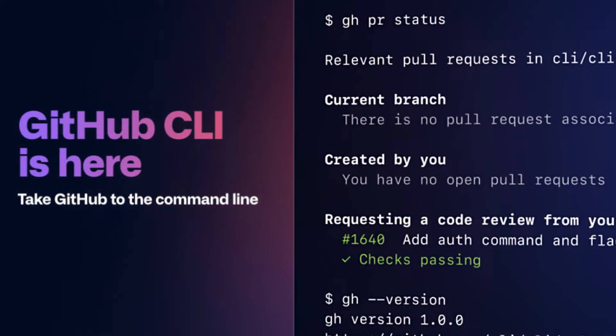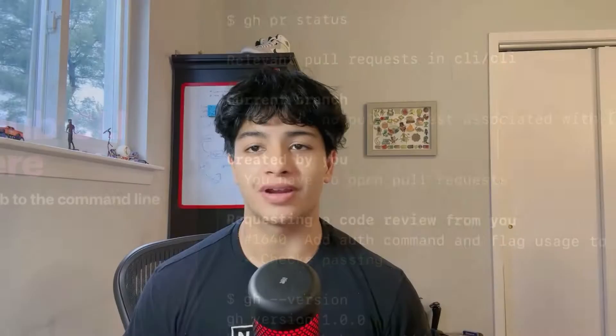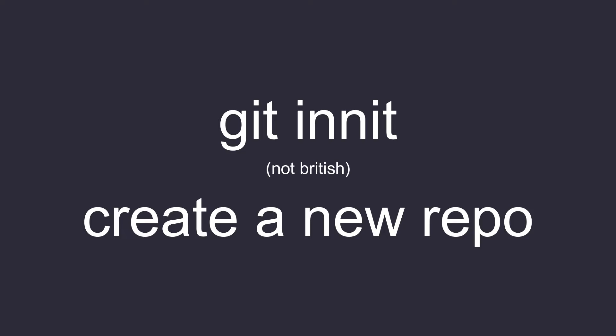Git has a command line interface. To initialize your repository in your working directory, you can use the git init command. Once initialized, GitHub will start tracking your changes in your project.